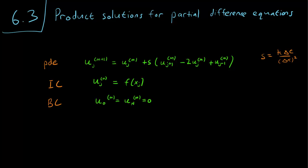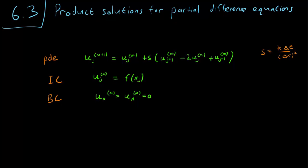So here we have our partial difference approximation. Remember that j refers to the approximate space variable and m refers to the approximate time variable. Our s is given by k times delta t over delta x squared, where delta t is the gap in time and delta x is the gap in space.